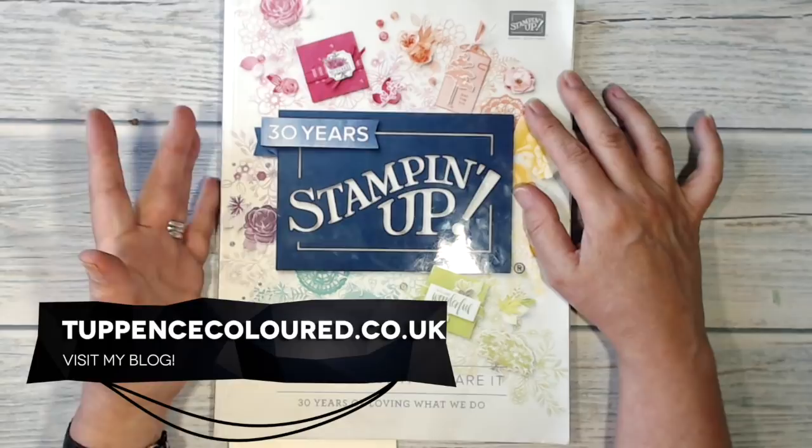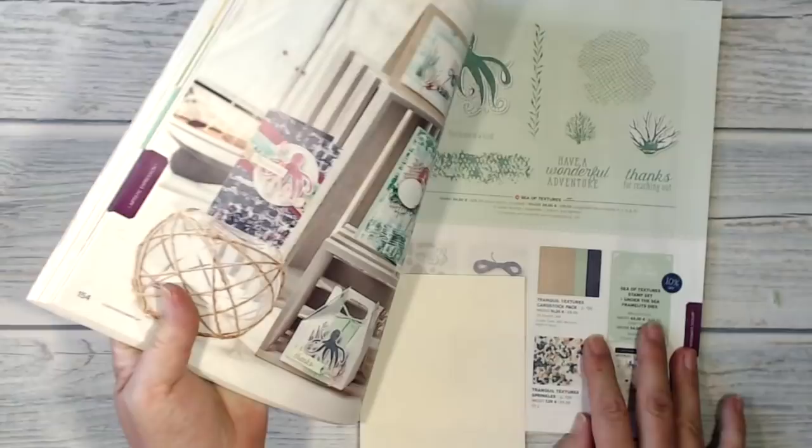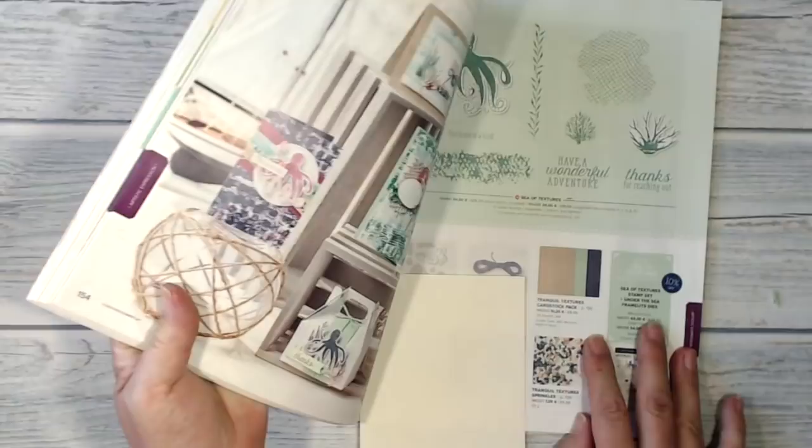For today's project I've been taking a look inside the Stampin' Up! catalogue. We used to call it the ideas book because when you look inside there are lots and lots of wonderful ideas. And today I have been inspired by this page, the Tranquil Textures Suite.